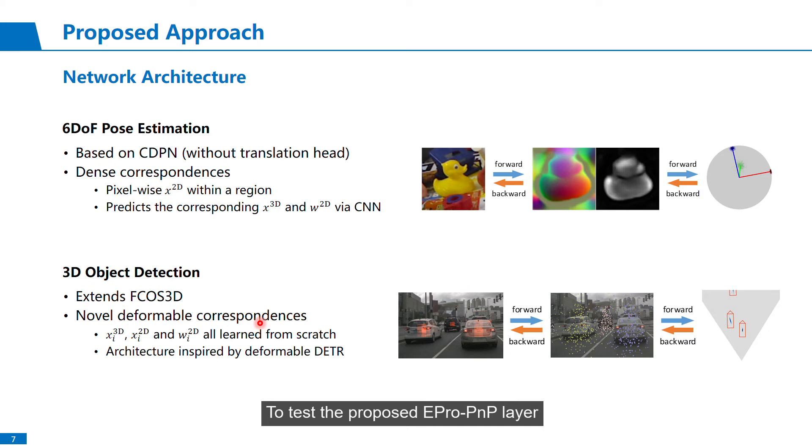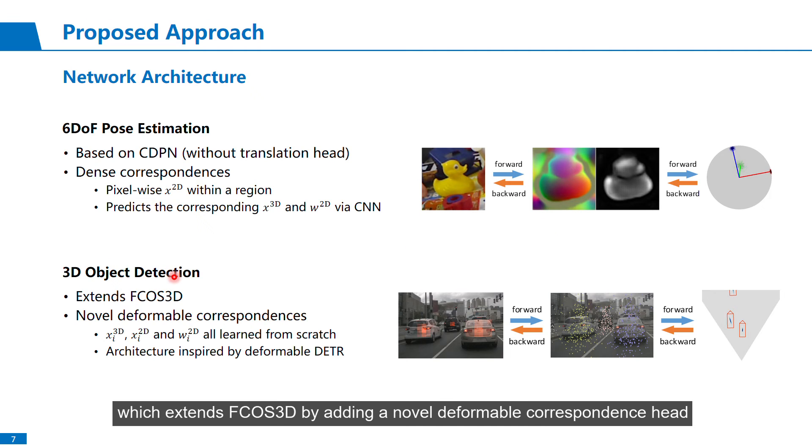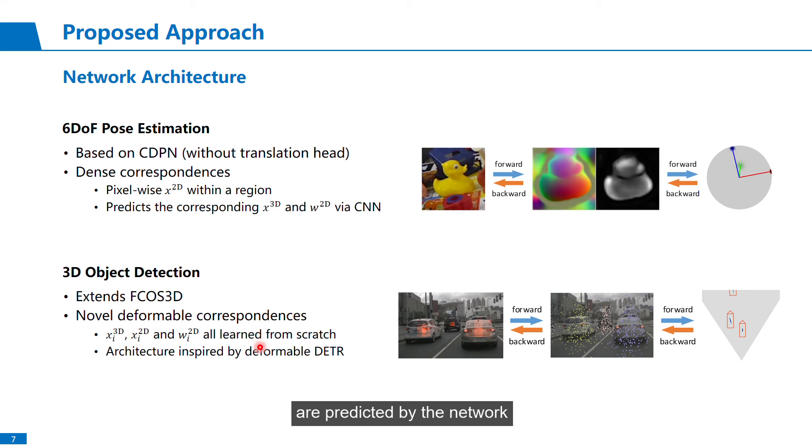To test the proposed EPro-PnP layer, we've tried two network architectures. One for 6DoF pose estimation, based entirely on CDPN without translation head. This is a dense correspondence network, which uses pixel-wise 2D coordinates, and only predicts the dense 3D coordinates and width. Another is for 3D object detection, which extends FCOS3D by adding a novel deformable correspondence head. In this network, the entire 3D coordinates and width are predicted by the network. We explore the flexibility of the proposed method.